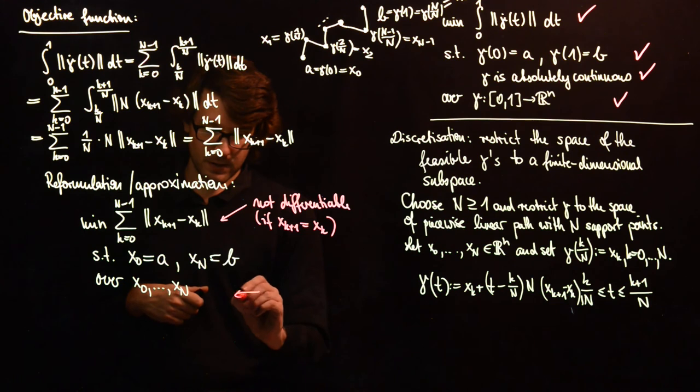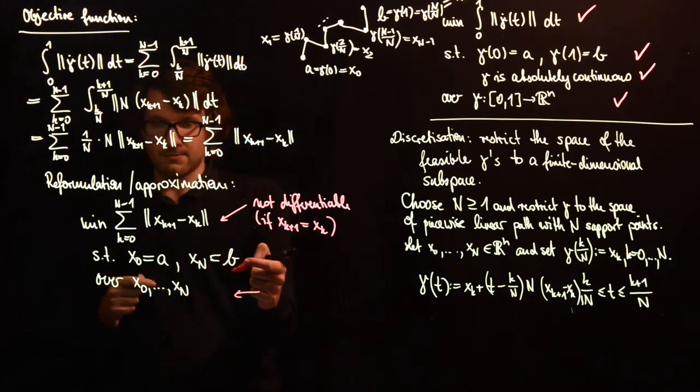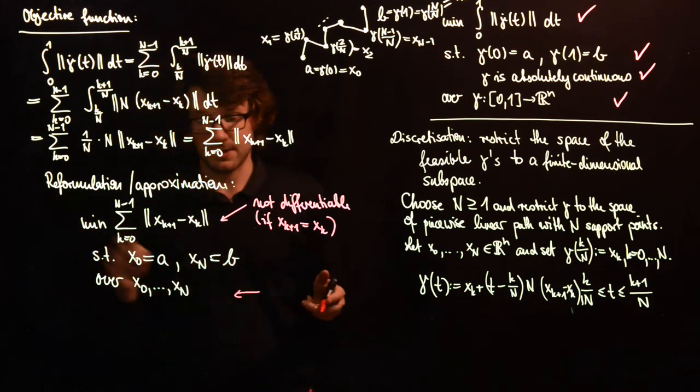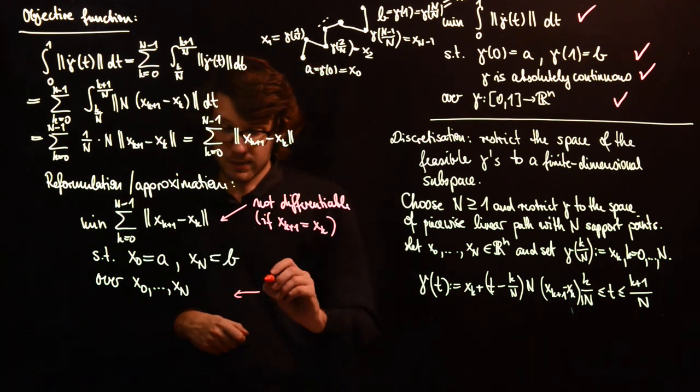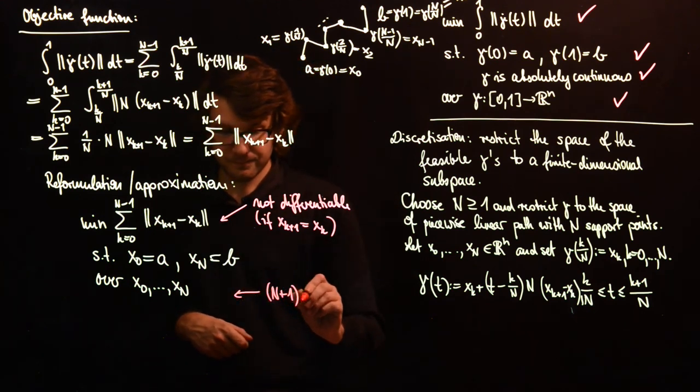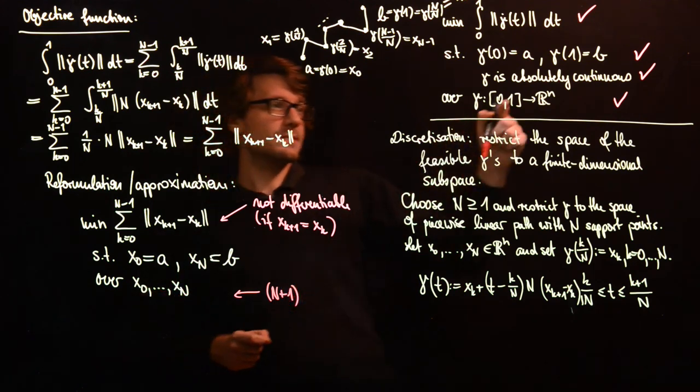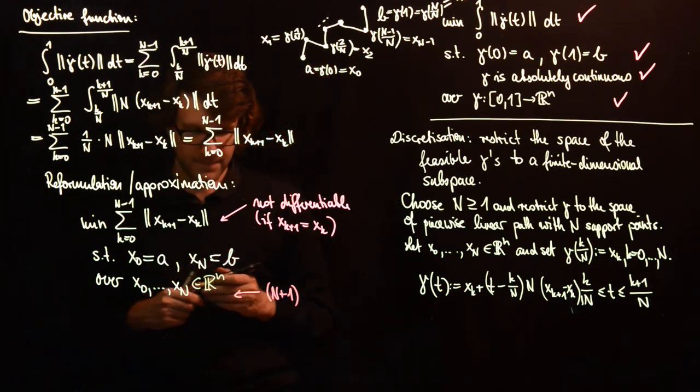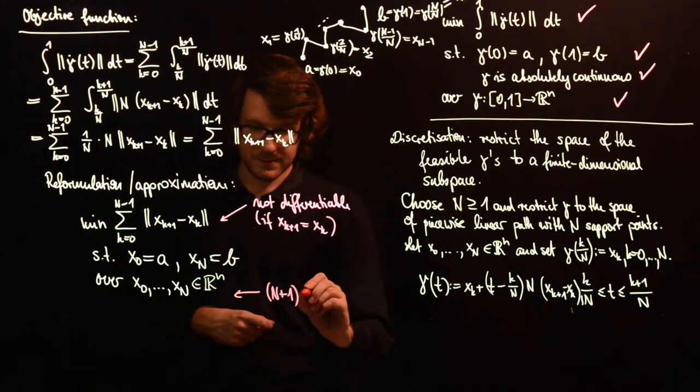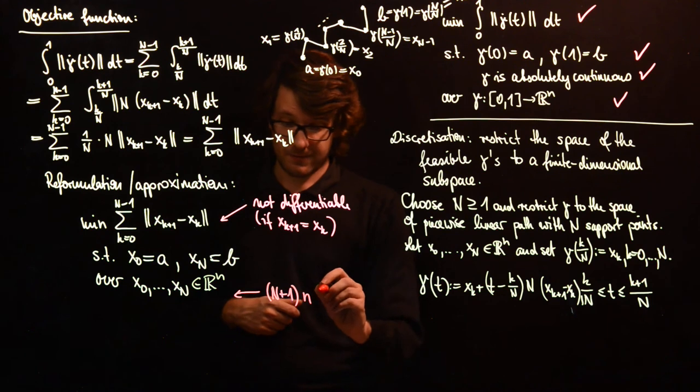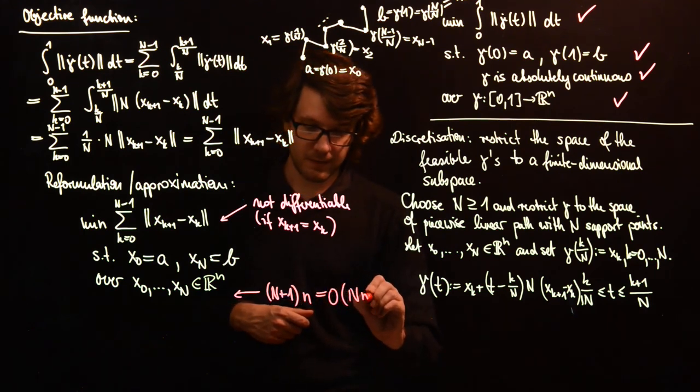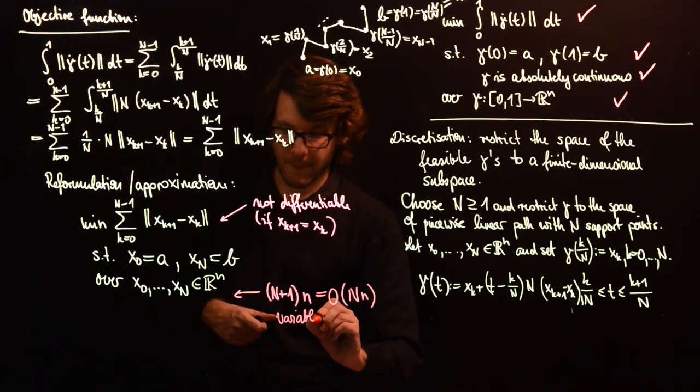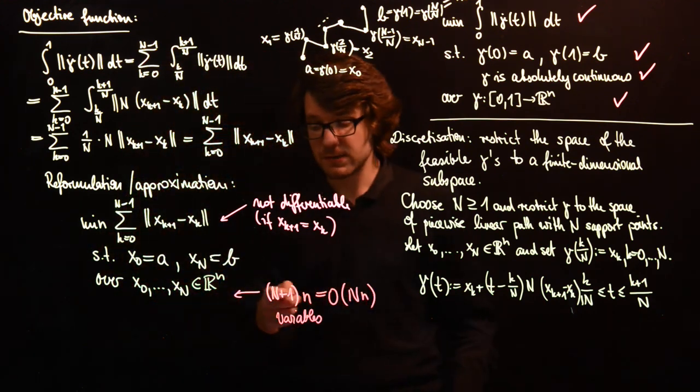And how many variables do we have? Of course we can replace the variables x0 by A and x capital N by B, but it doesn't really matter because that's a constant number of variables. So here we have n plus 1 variables. And since we are in Rn, each of these variables has n components. So we have O of capital N small n variables.